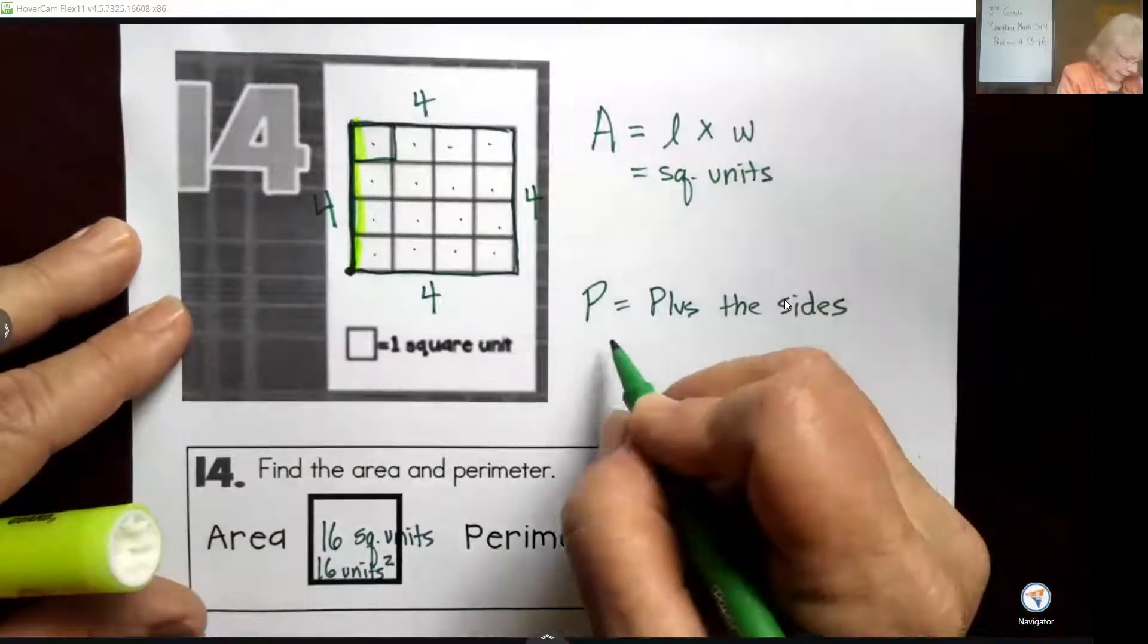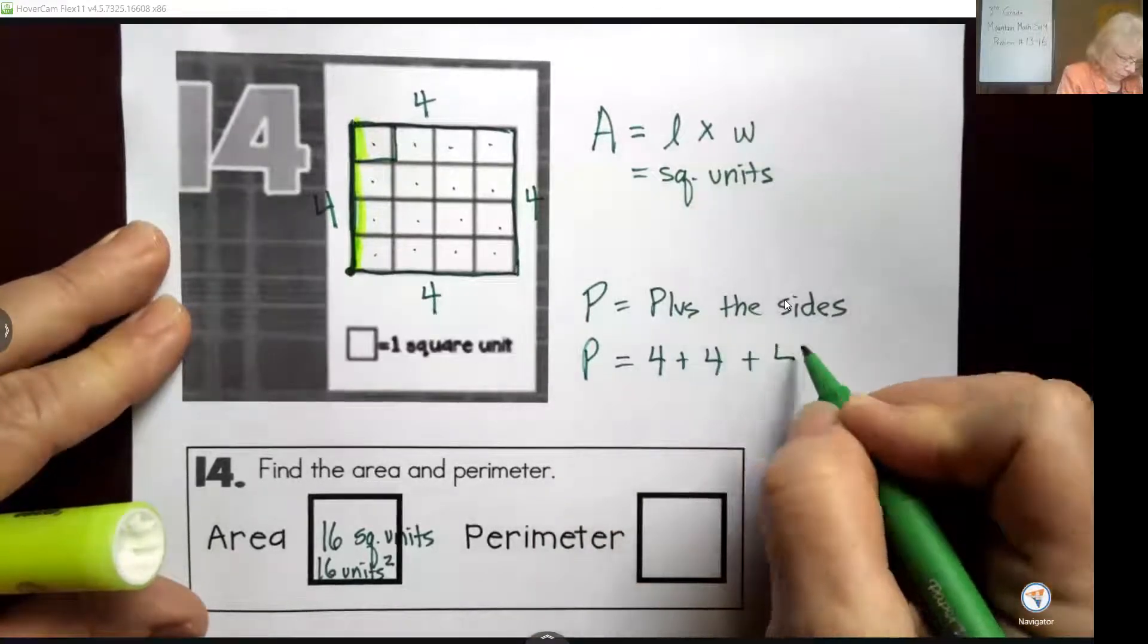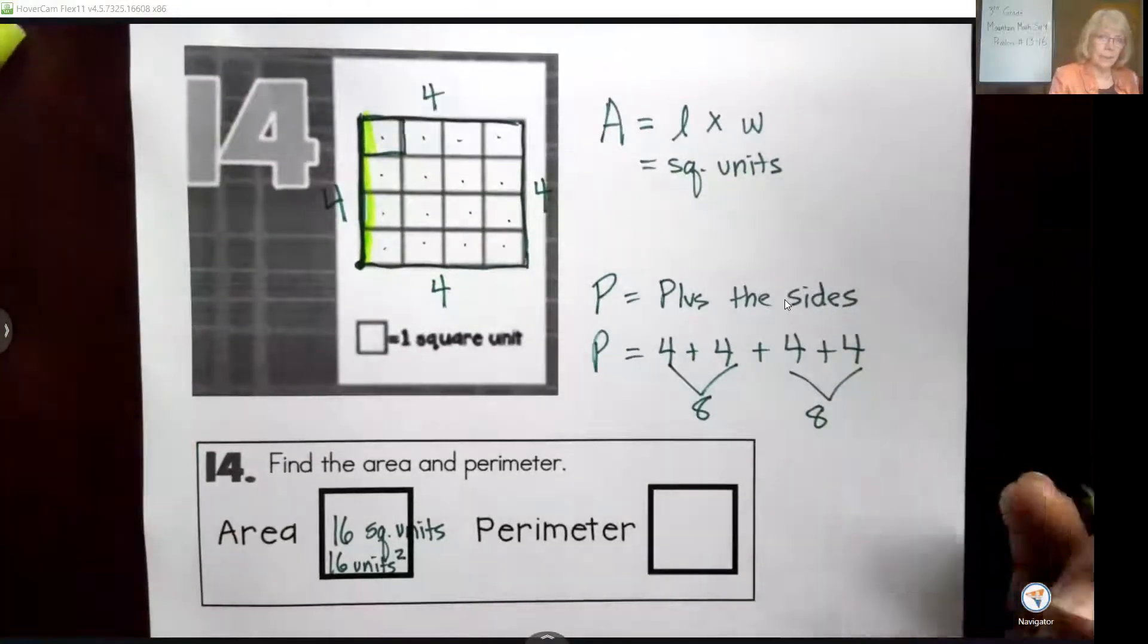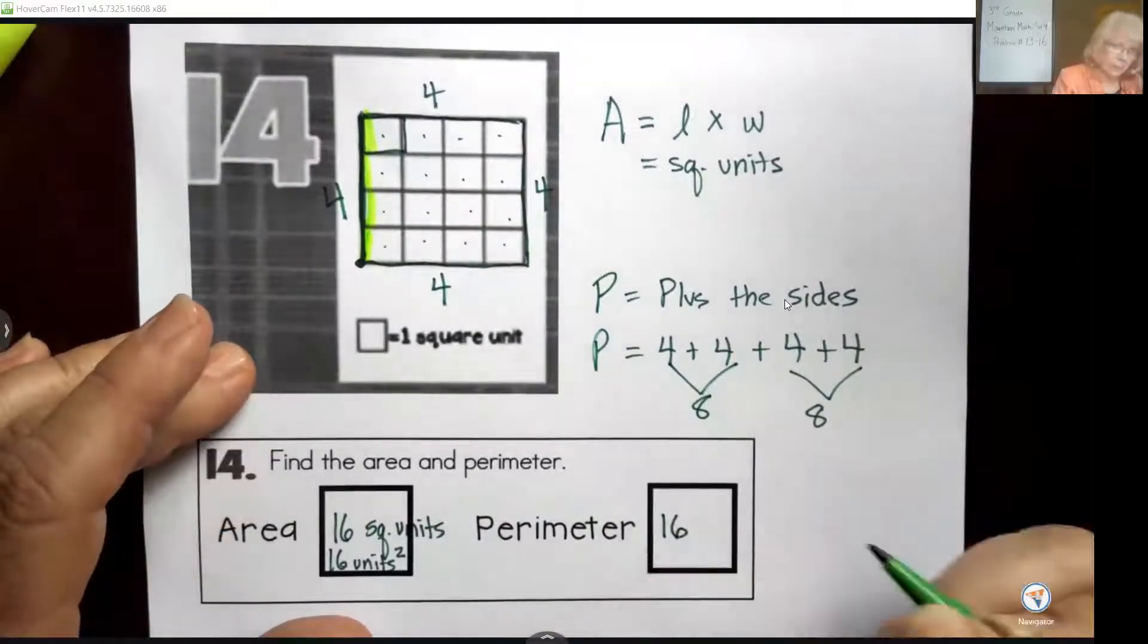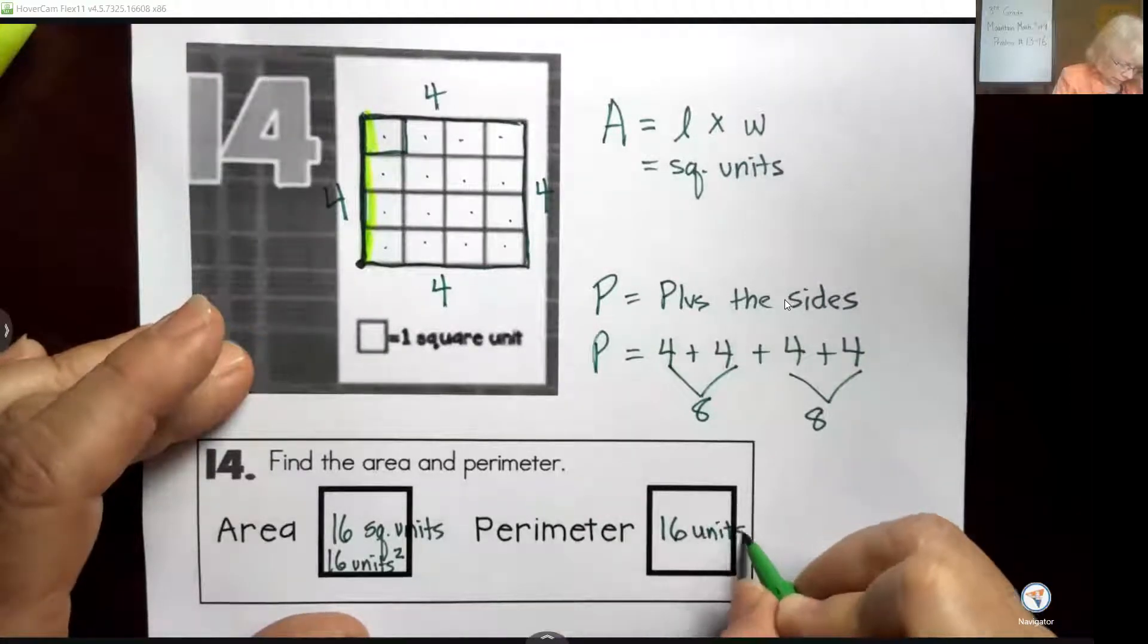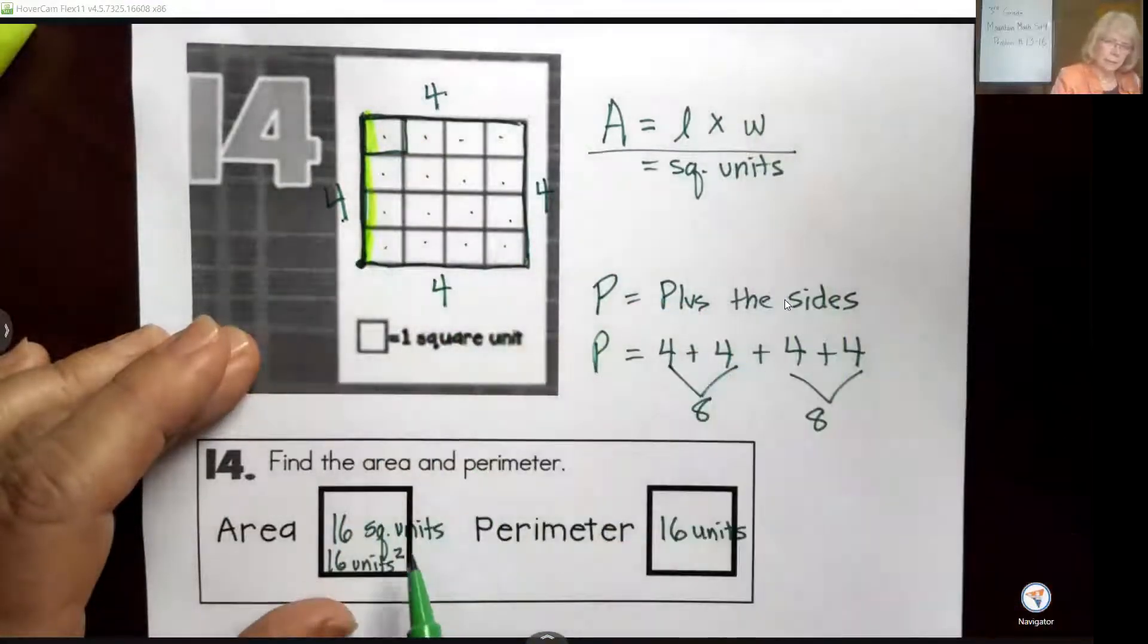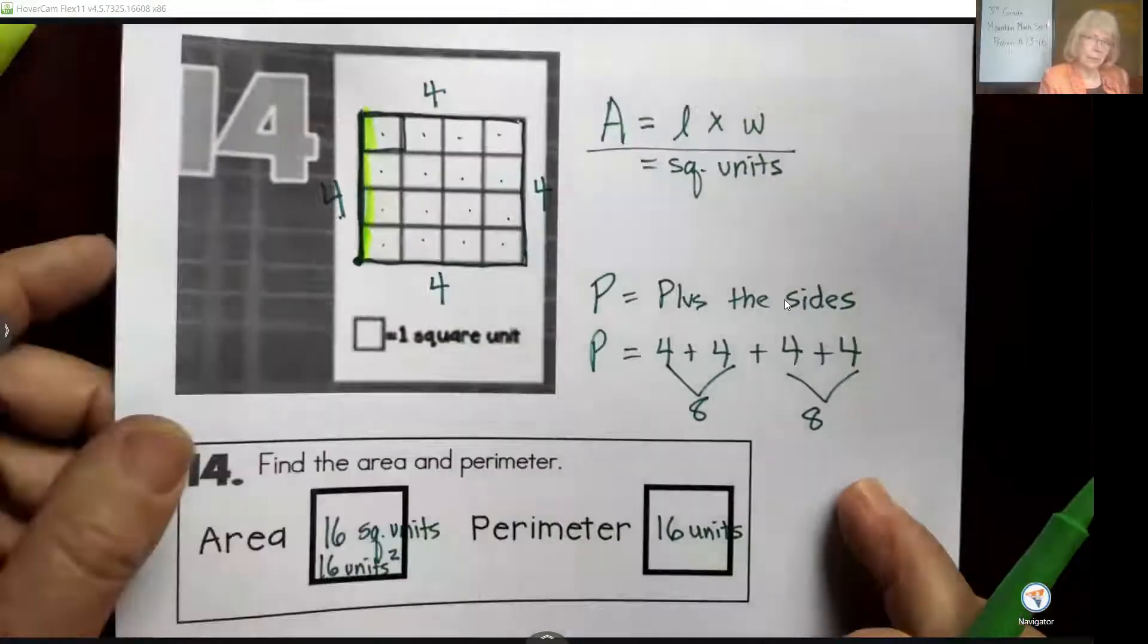Now if I add these up, perimeter equals 4 plus 4 plus 4 plus 4. Let's add that together and we get 16. That's very unusual, by the way, to get perimeter and area with the same number, but this time it's just units. If we wanted to go back and check, did we have area correct? We could say 4 times 4, yes, equals 16. So when you're dealing with a square, area and perimeter give you some interesting answers.